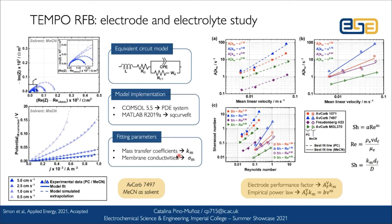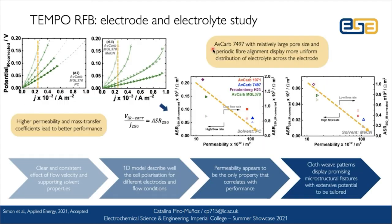We are also able to fit the mass transfer coefficients from the polarization data, which we can then plot against velocity as a performance factor and study the mass transfer limitation conditions in each of these electrodes. Again, we see that cloths are better performing than the carbon papers tested. Finally, we related the area-specific resistance for a specific current density across all tests and plotted this against permeability to see a clear correlation with performance.